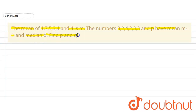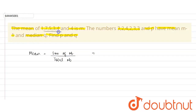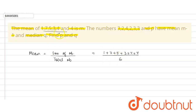We have to find the value of p and q. The formula of mean is sum of observations divided by total number of observations. So first we will find the mean of these terms: 1 plus 7 plus 5 plus 3 plus 4 plus 4, upon total number of terms that is 6. The mean of this number is m, so m equals 24 by 6, that is 4.